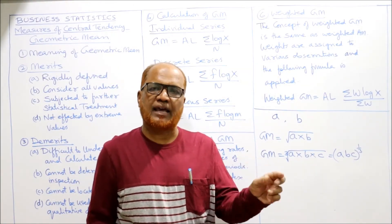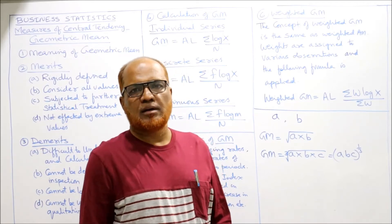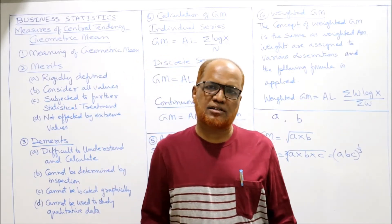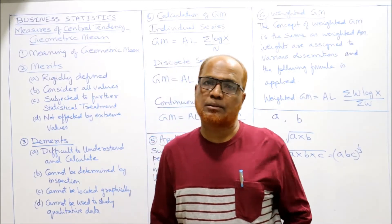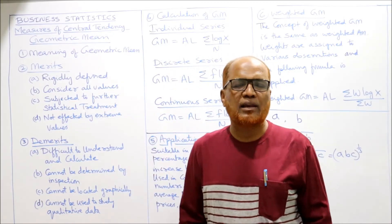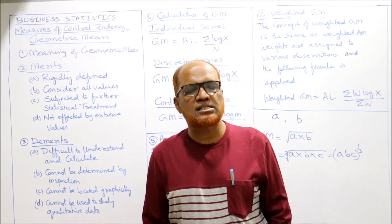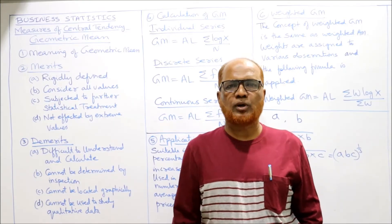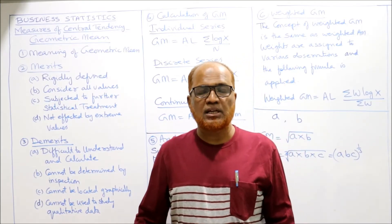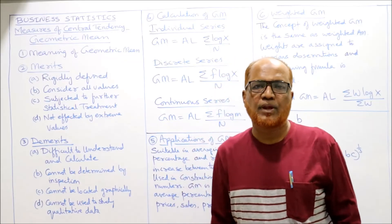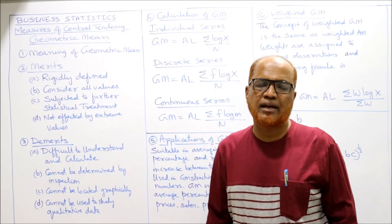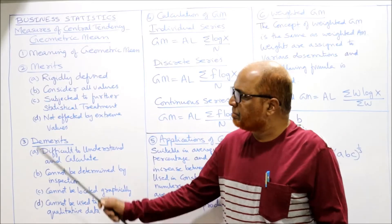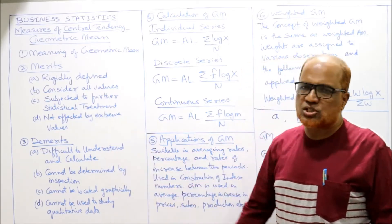While calculating geometric mean it can be very difficult because we have to use logarithm values. If only two values are there we can easily find geometric mean by taking the square root, but when more than three items are there we have to make use of the logarithm table to calculate geometric mean. Now, what are the merits of geometric mean?